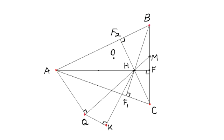We see triangle ABC, orthocenter H, altitude AF, and we see two other altitudes, BF1 and CF2 as well.